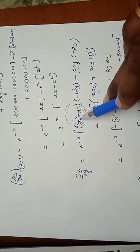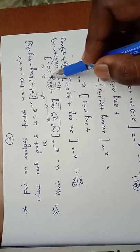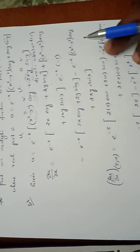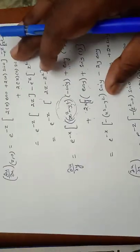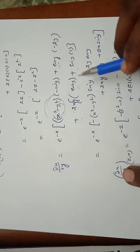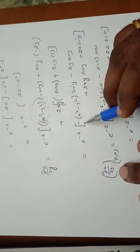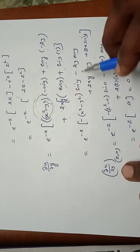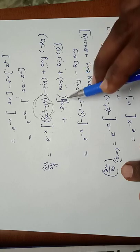Differentiating cos(y) gives -sin(y), plus cos(y) is fixed and differentiation of (x² - y²) gives -2y. For the 2xy·sin(y) term, applying the UV formula with 2x fixed: differentiation of y gives 1 times sin(y), plus y times cos(y). So ∂u/∂y = e^(-x)[-(x² - y²)sin(y) - 2y·cos(y) + 2x·y·cos(y) + 2x·sin(y)] - e^(-x)[(x² - y²)cos(y) + 2xy·sin(y)].